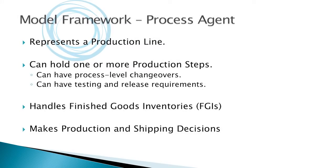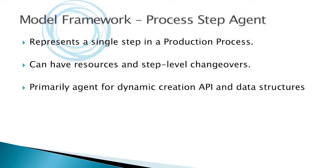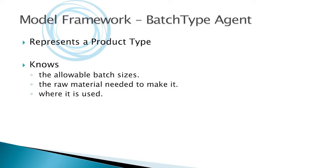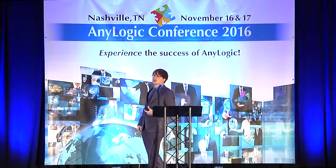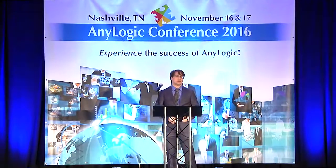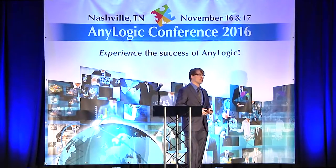A process agent is a single production line — a process to build one product. It can have one or more production steps defined from an input file and changed at runtime. It handles process changeovers and holds the finished goods inventory for any given process. This is also where the primary decision logic was held. A process step is a simple single step that can have its own minor changeovers — primarily used for dynamic creation.